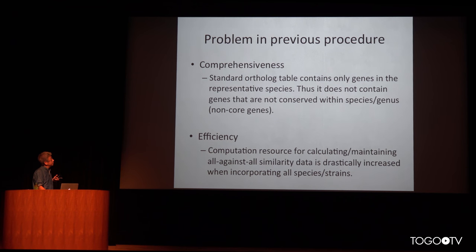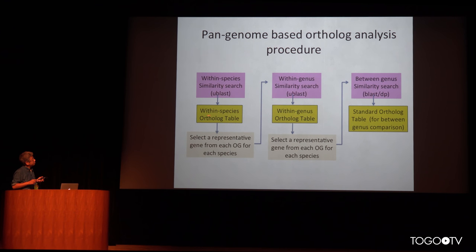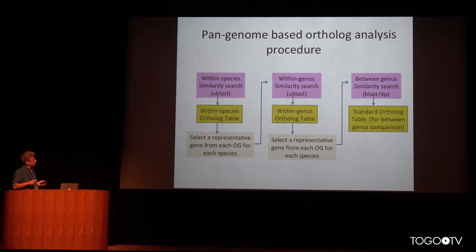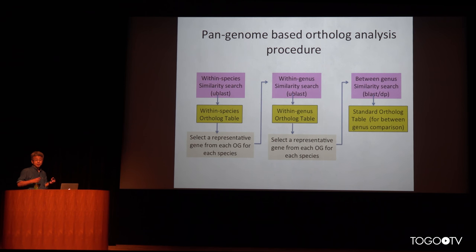To overcome these problems, we modified the procedure with what we call pan-genome based ortholog clustering. The procedure is step-wise: first, we create the ortholog table within species, using all genome data belonging to each species. Then we select a representative gene from each ortholog group and create the pan-genome of each species. This is then the input for the next step, where we create a genus-level ortholog table, select representative genes, and create a genus-level pan-genome.